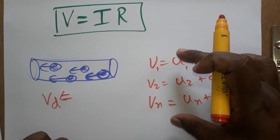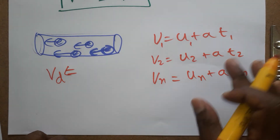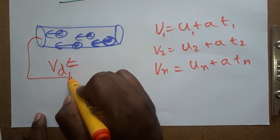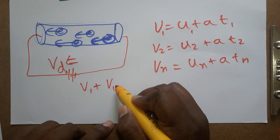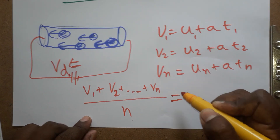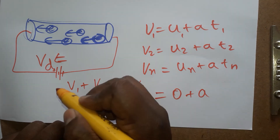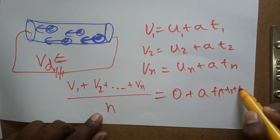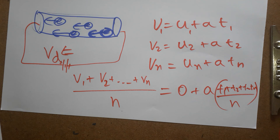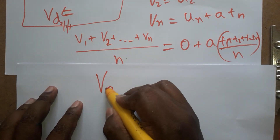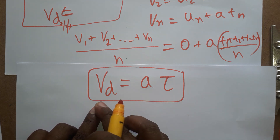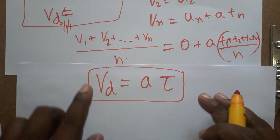The average initial velocity of all electrons is zero. The average final velocity — (v1 + v2 + ... + vn)/n — gives us the drift velocity. The average time (t1 + t2 + ... + tn)/n is the relaxation time τ. Therefore, drift velocity equals acceleration times relaxation time: vd = a·τ. This is equation one.